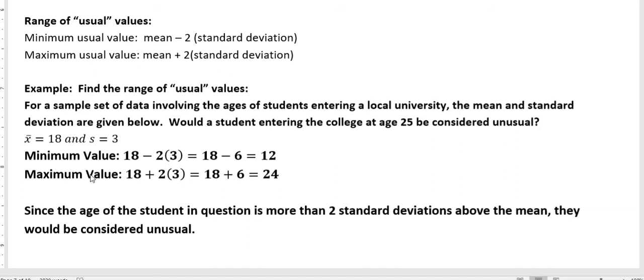And on the other hand, a maximum value would be 18 plus two times three. Again, it's six, but this time we're adding it on, so we have the mean value plus six, and that gives us 24. And that tells us that 95 percent of the students entering into that university are between the ages of 12 and 24.